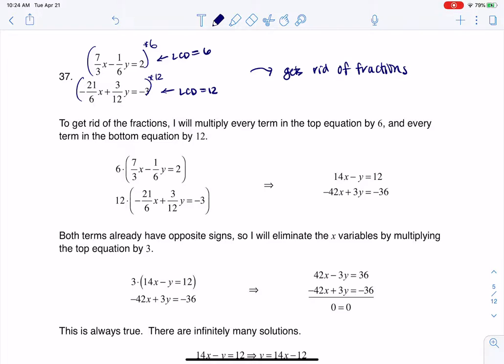So I just need to distribute this 6 to every term in here. The most common error is sometimes we forget to do this last distribution—we forget to distribute to the other side of the equal sign. I'm going to do the same thing here. I'm going to distribute the 12. And when I do that, these are the two equations that I wind up with, or I should say multiply to.